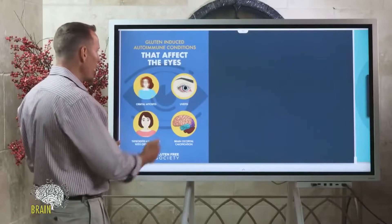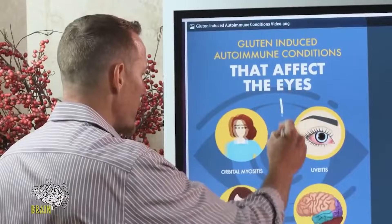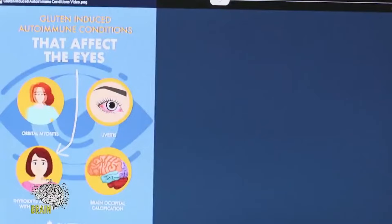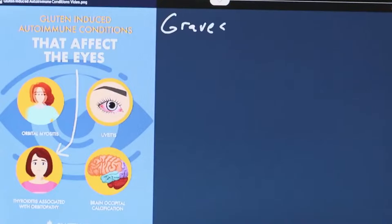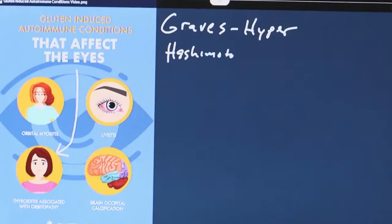Probably the biggest autoimmune condition here is thyroiditis. If you've ever had a diagnosis of Graves' disease — which is a form of hyperthyroidism and an autoimmune condition — or you've been diagnosed with Hashimoto's, which is hypothyroidism, both of these are autoimmune conditions.